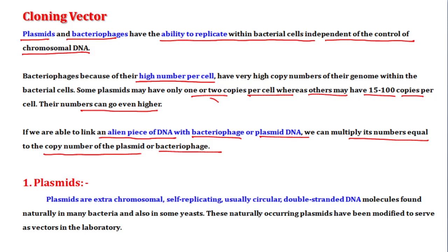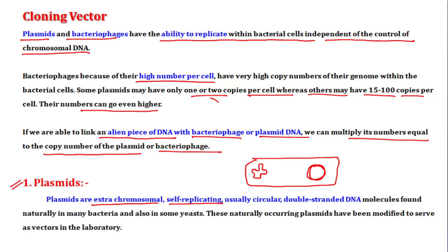Let's talk about plasmids. A bacterial cell has a main chromosome that controls its specific features, but plasmids are extra-chromosomal, self-replicating, circular, double-stranded DNA molecules found naturally in many bacteria and in some eukaryotic cells.